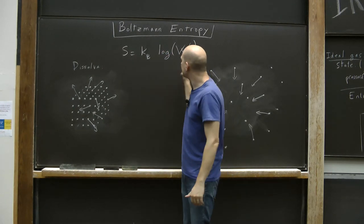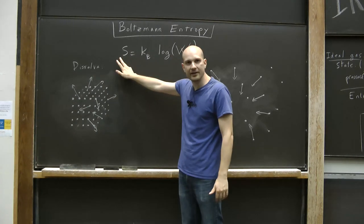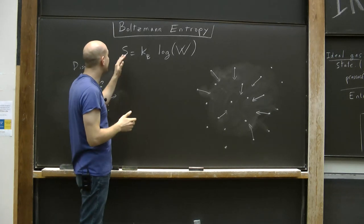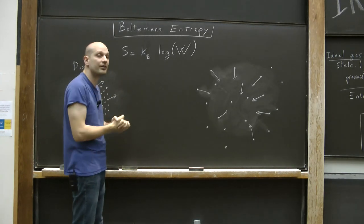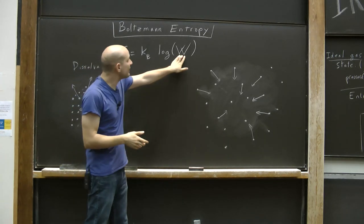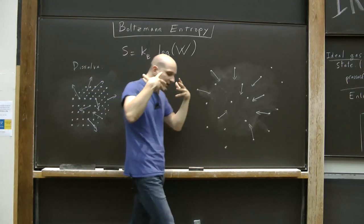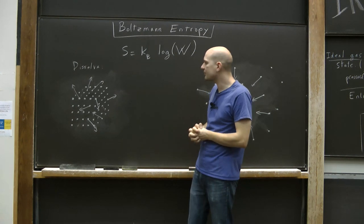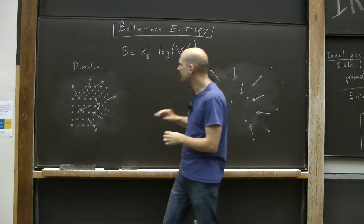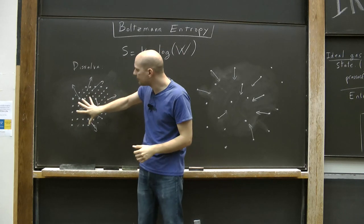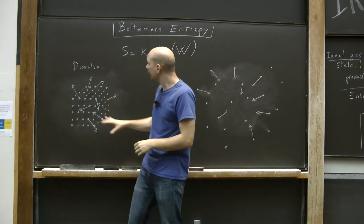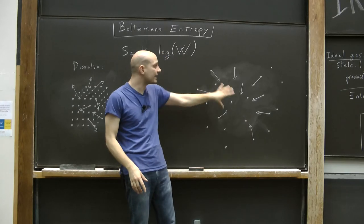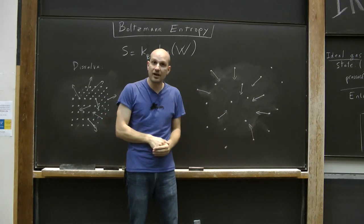And this is exactly what is captured by the formula S = k_B log W. This formula was derived by Ludwig Boltzmann. This S is called the Boltzmann entropy. The W measures the number of states that all look like the macroscopic state that you're interested in. So in the case of the sugar cube, W would measure the number of states that look like a sugar cube, whereas for the dissolved sugar, it would look at the number of states that look like dissolved sugar.